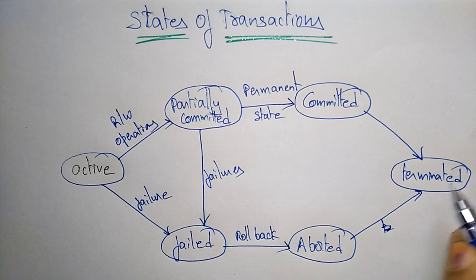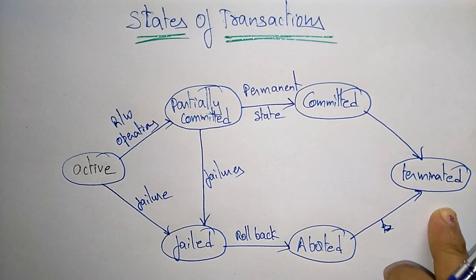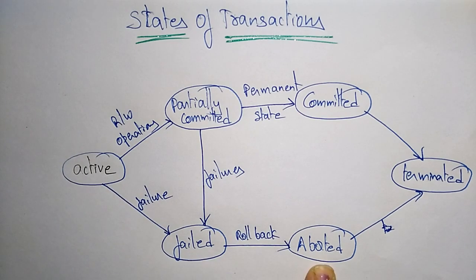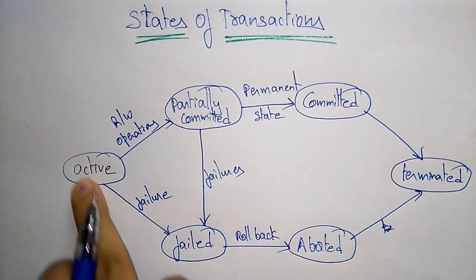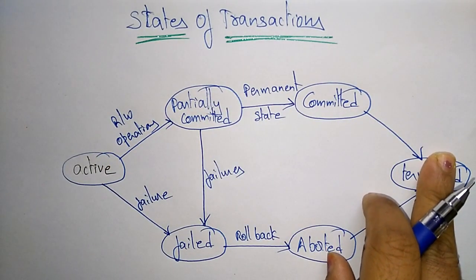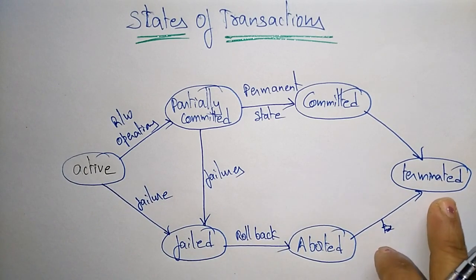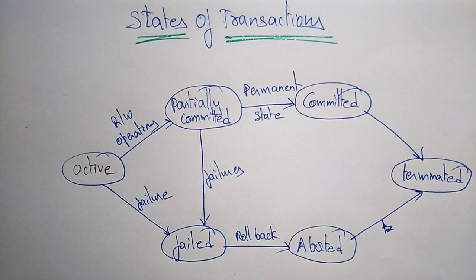Without executing means the values in the database will not be changed if the transaction entered into failed, aborted, and terminated. In the path from active to partially committed to committed and terminated, the transaction will be successful and the database will be consistent. When aborted, the database should also be consistent. You must make sure that whatever transactions you are doing follow the ACID properties, which keep the database in a consistent state.